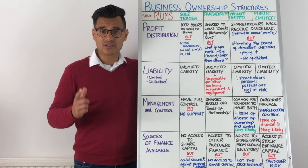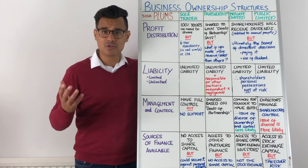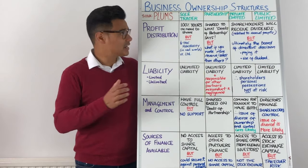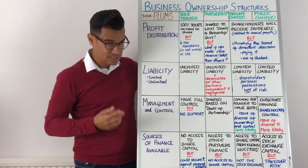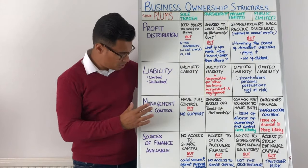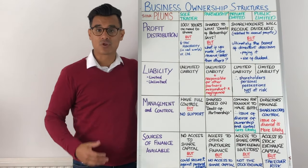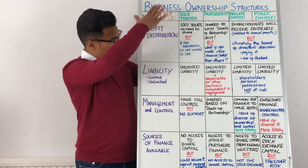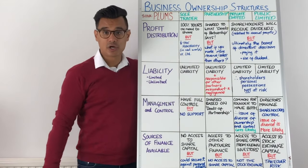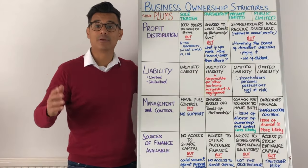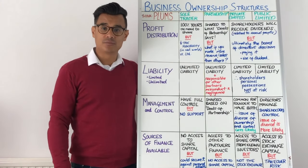the way to do it and the thing to think about is PLUMBS. PLUMBS is beautiful. PLUMBS stands for Profit Distribution, Liability Limited or Unlimited — that's the L and the U — Management and Control, and Sources of Finance Available. So we're going to go through all of the things in PLUMBS for sole traders, partnerships, private limited companies and public limited companies, and we'll start with Profit Distribution.